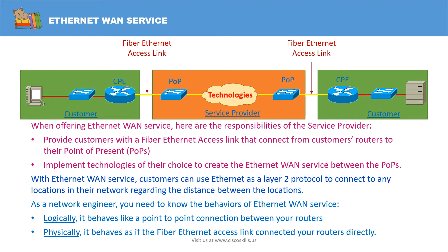With Ethernet WAN service, customers can use Ethernet as a Layer 2 protocol to connect to any location in their network regardless of the distance between the two locations. As a network engineer, you need to know the behaviors of Ethernet WAN service. Logically, it behaves like a point-to-point connection between your routers. Physically, it behaves like the fiber Ethernet access link connected to your router directly.